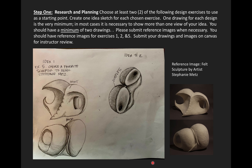Let's talk about the procedure. Step one, which is 25% of your final grade, is research and planning. Choose at least two of the design exercises from your handout to use as a starting point. Create one idea sketch for each chosen exercise — one drawing per design is the very minimum. Remember we're creating three-dimensional art, so in most cases it's necessary to show more than one view of your idea. You should have a minimum of two drawings for your planning and research. If you choose exercises one, two, or five, you will need to submit a reference image. For example, if you chose to be inspired by a famous sculptor like Stephanie Metz, you would need to share a reference image of her work.